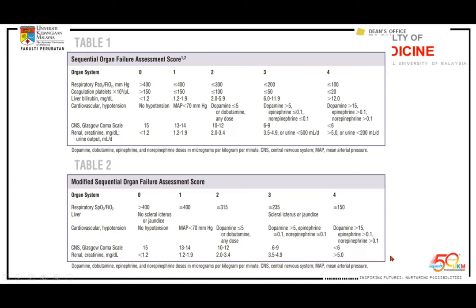What is different in the Modified SOFA score? For respiratory, the standard SOFA uses PaO2/FiO2, requiring an ABG and liver function test. For Modified SOFA, we don't need an ABG — we just use SpO2 and estimate FiO2 under room air, on oxygen, or on high-flow. For liver, we just look at jaundice or no jaundice. For cardiovascular, we only need BP. GCS can be scored peripherally, and renal creatinine comes from a blood test. All settings can get this information very simply.